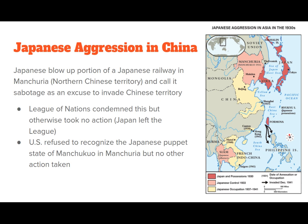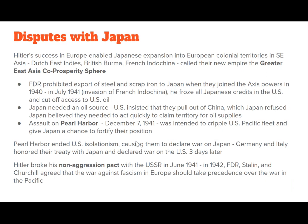Regarding Japanese aggression: Japan blew up a portion of railway in Manchuria in 1933 and blamed it as sabotage to justify invading Chinese territory. The League of Nations condemned this but took no action, and Japan left the League. The U.S. didn't recognize Japan's puppet state of Manchuria but took no further action, which probably encouraged further aggression. Hitler's success in Europe enabled Japanese expansion into European colonial territories in Southeast Asia — the Dutch East Indies, British Burma, and French Indochina — which they called the Greater East Asia Co-Prosperity Sphere. FDR increasingly prohibited exports to Japan like steel and scrap iron, and when Japan joined the Axis and invaded French Indochina, he froze Japanese credits and cut off U.S. oil. Japan refused U.S. demands to pull out of China.